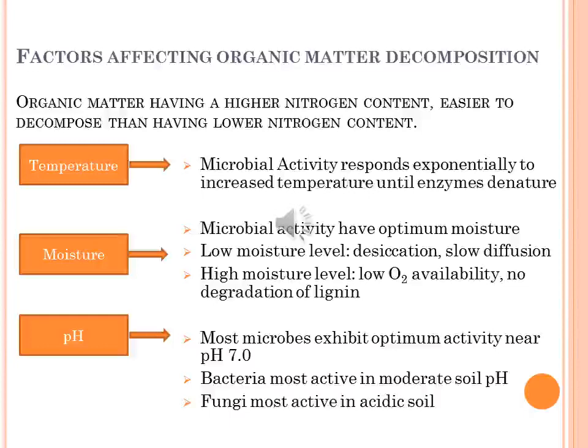Regarding pH: bacteria function best in the pH range of 7 to 8.5. When pH is lower, decomposition by fungi is favored over that by bacteria, especially at pH less than 6.5. Fungi are not as efficient as bacteria in decomposing organic matter because they convert more of the organic matter into their own biomass. Aquaculture ponds are typically managed to maintain a sediment pH above 7, and there is usually plenty of dissolved oxygen in the water column, with organic matter tending to be easily decomposable.